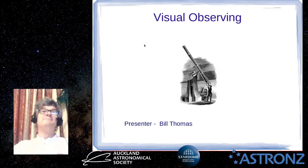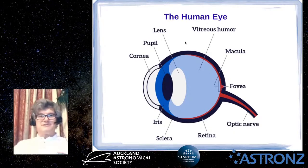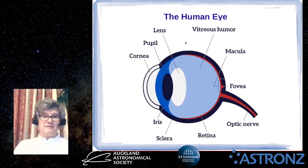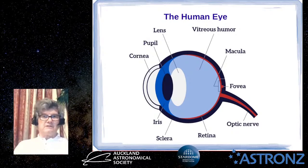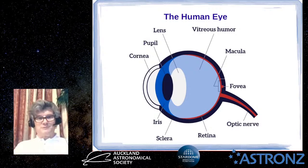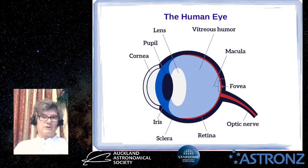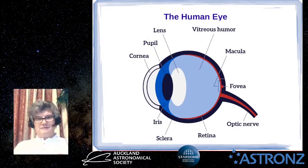The first thing we're going to look at is the eye. This diagram is a schematic without a lot of detail, but it shows the cornea, which is not just a protective layer — it is actually a refractive element that's part of the eye's optical system. Immediately behind it is a liquid called the aqueous humor.